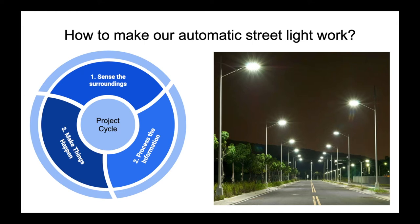An automatic street light is something that will automatically switch on and switch off the street lights based on light availability. For example, when the sun begins to set, the light availability gets lower and lower, and due to this, the street light needs to be restored. This work can be done automatically without any manual intervention — that is the automatic street light project.